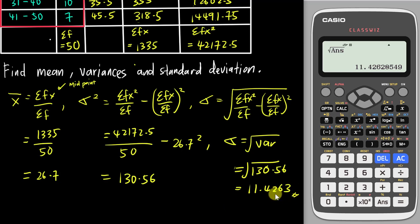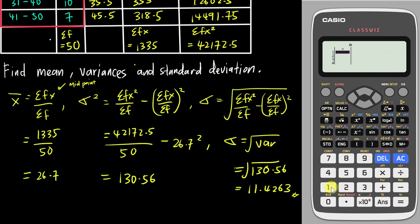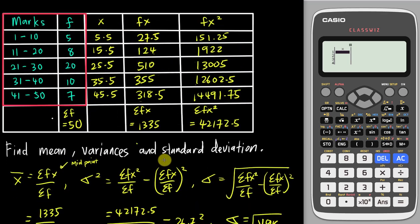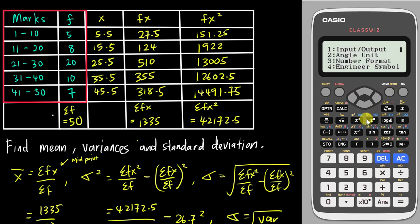Now I'll use the calculator to double-check whether my answers are correct. Go to the menu, then select number 6 for Statistics — this is the one-variable calculation mode. The calculator initially shows a table for ungrouped data without frequency. To add a frequency column, go to Shift then Menu for Setup, scroll down to Statistics which is number 3, and turn on frequency by selecting 1.